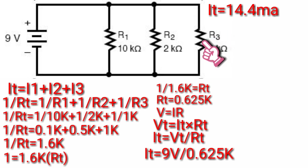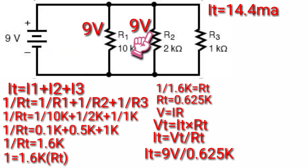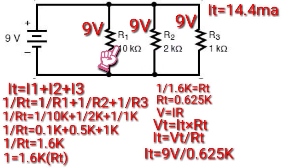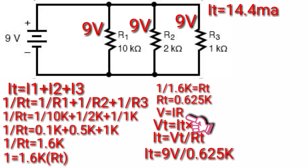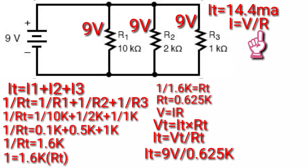Since the resistors are parallel to the battery, the voltage across all the resistors must equal the voltage of the battery. Now we can calculate the current flowing from each resistor using Ohm's Law: voltage is equivalent to current times resistance, simplified to current equivalent to voltage divided by resistance.